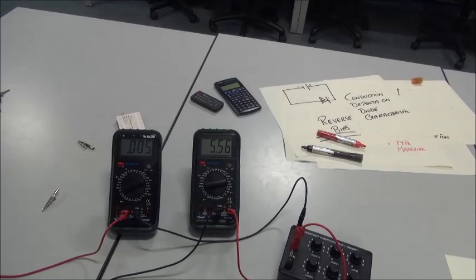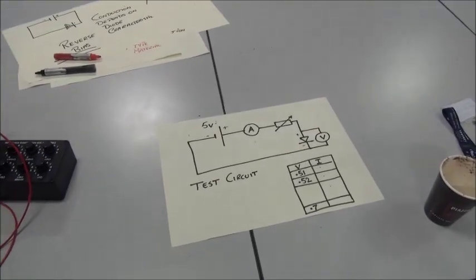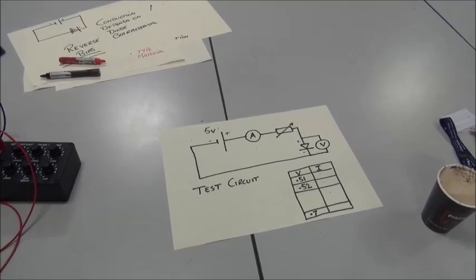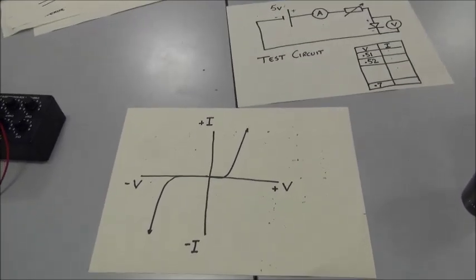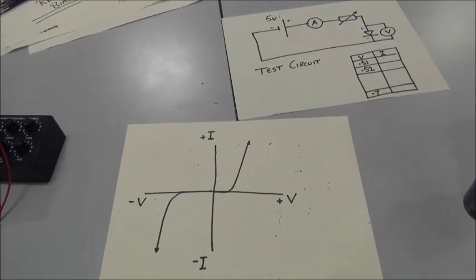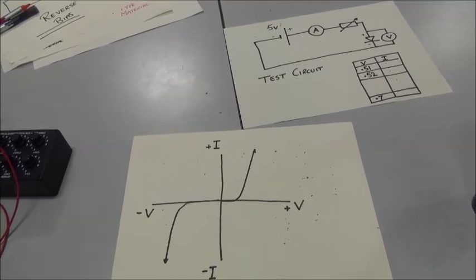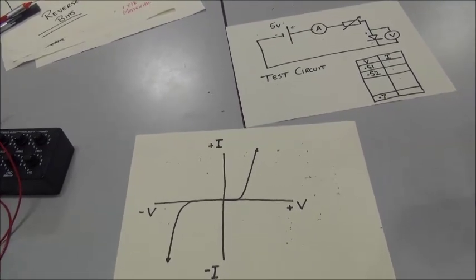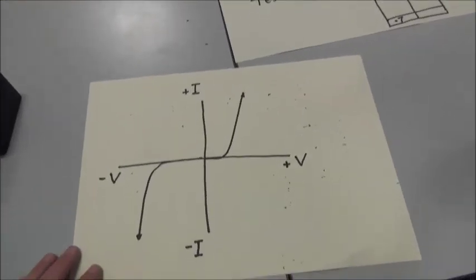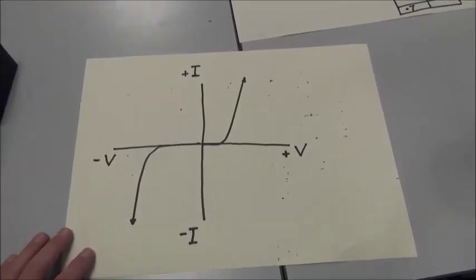And then, once again, it's a case of putting all your results in a table, both for forward bias and for reverse bias. When you've completed all your results, you need to plot them on a graph. Now, by far the easiest way to do this is in Excel. And I've done a video to show you how to do that. Or you can plot the graph by hand. But when you're finished, you should have a graph that looks something like this.